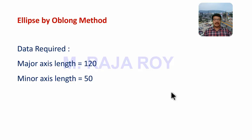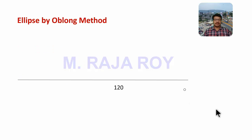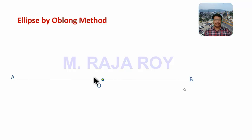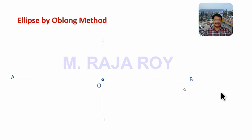Now let us start drawing the ellipse using the Oblong method. Draw the major axis with the given length and call it AB. Then locate the midpoint of the major axis and name it O. Draw a perpendicular to AB at point O with the minor axis length, and name this as CD. That means CD length is 15 — from O, OC is 25 and OD is 25.